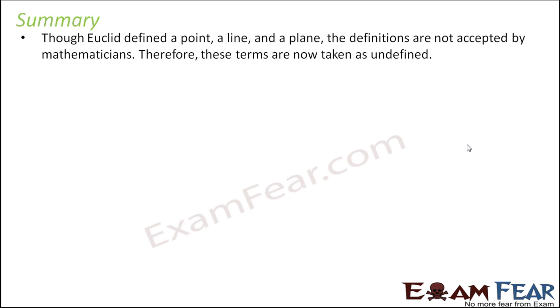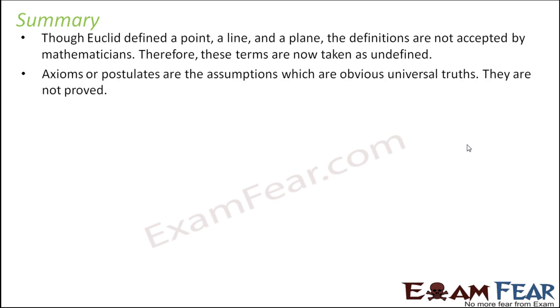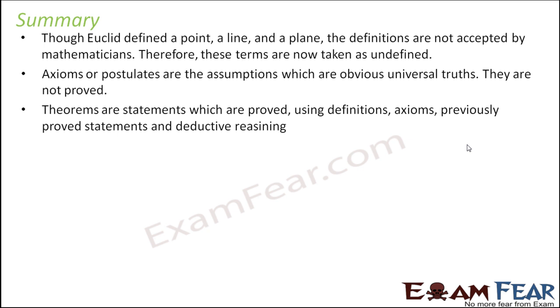Let us do a quick summary. Though Euclid defined a point, line, and plane, the definitions were not accepted by mathematicians and they are considered undefined because they used some terms which were not defined to define these definitions. Axioms and postulates are assumptions, they are obvious universal truths, they are not proved. Axioms are generic and postulates are more specific to geometry.